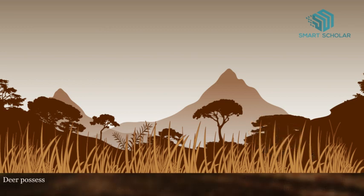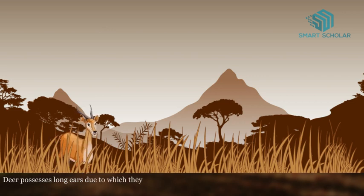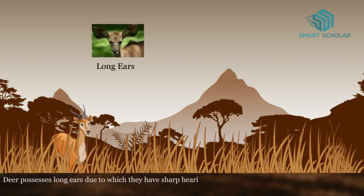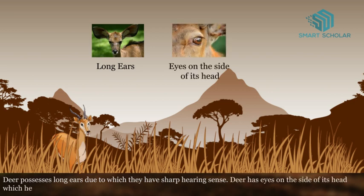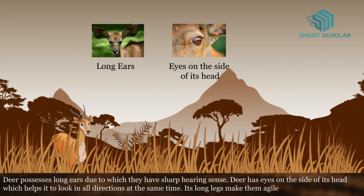Deer possesses long ears due to which they have a sharp hearing sense. Deer has eyes on the side of its head which helps it to look in all directions at the same time. Its long legs make them agile and enable them to run fast.